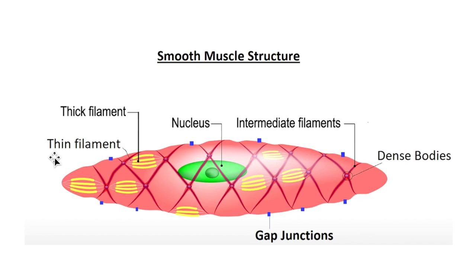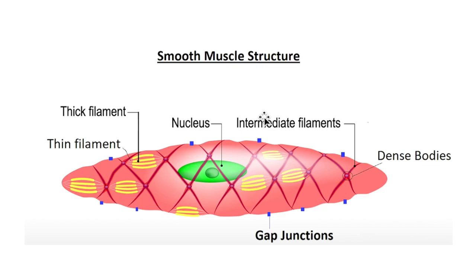As you look at this illustration of a smooth muscle fiber, you'll notice the single nucleus in the center, and a net-like structure running throughout the muscle fiber. The little dots on the side are called dense bodies, and they attach to something called the sarcolemma — the smooth muscle cell's outer sheath. They work similarly to the Z-disc in the sarcomere of skeletal muscles, anchoring the thin filaments. The dense bodies also allow for the attachment of intermediate filaments that add strength and stability to the structure.